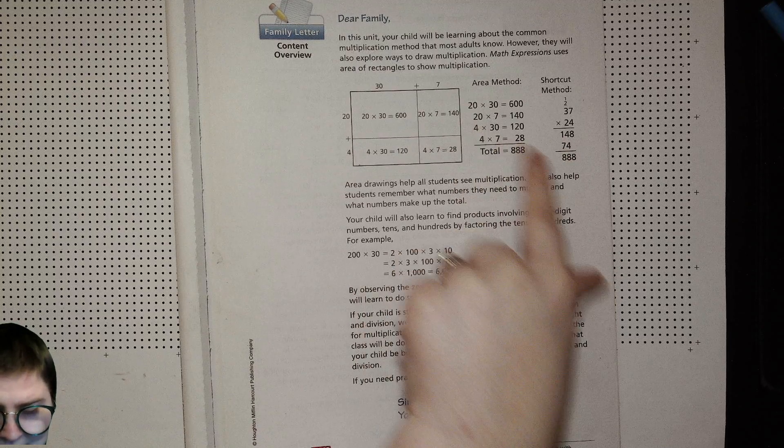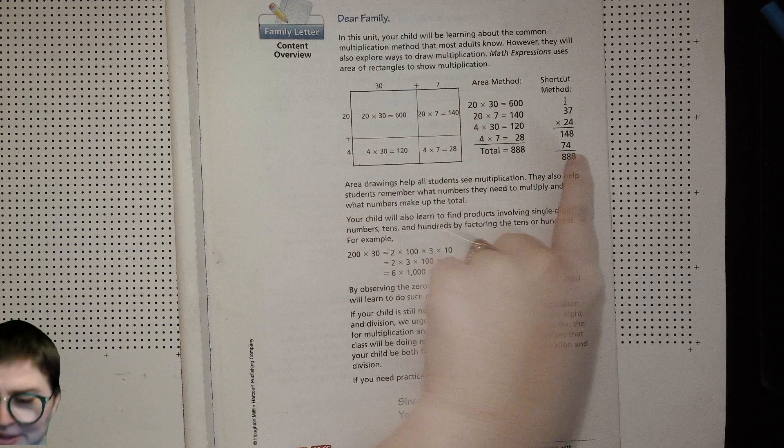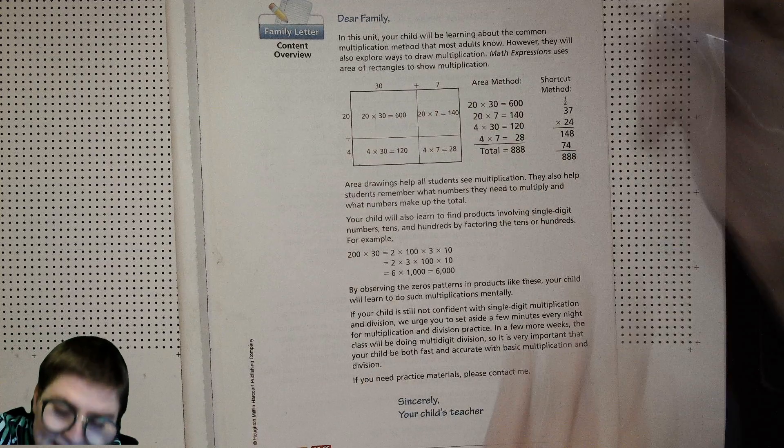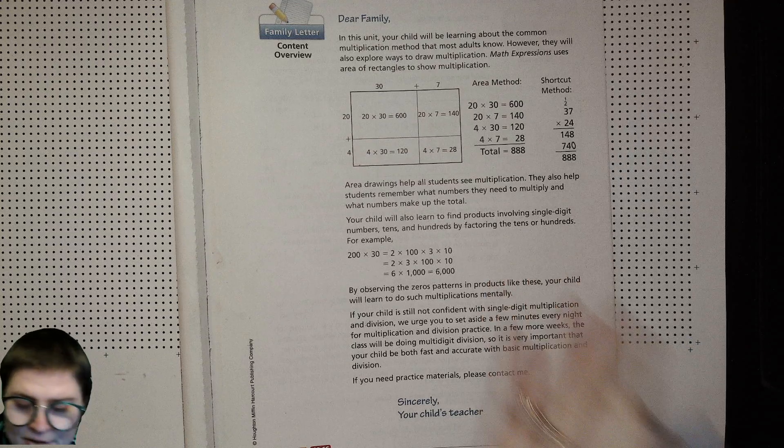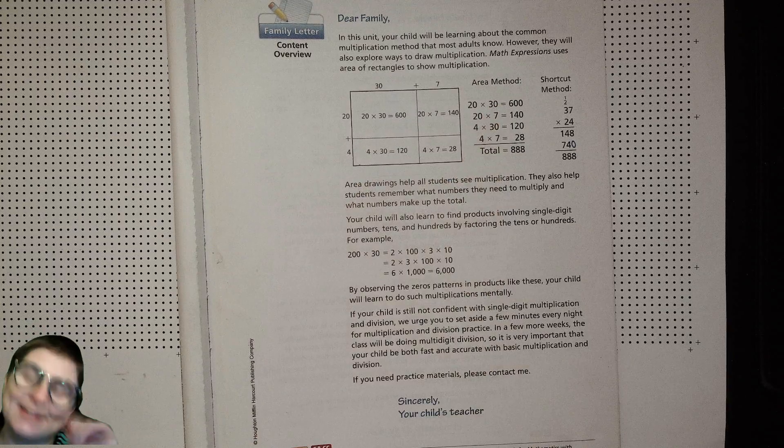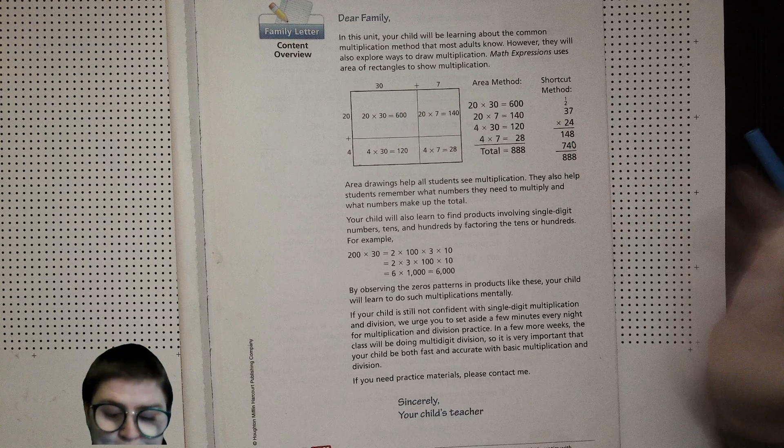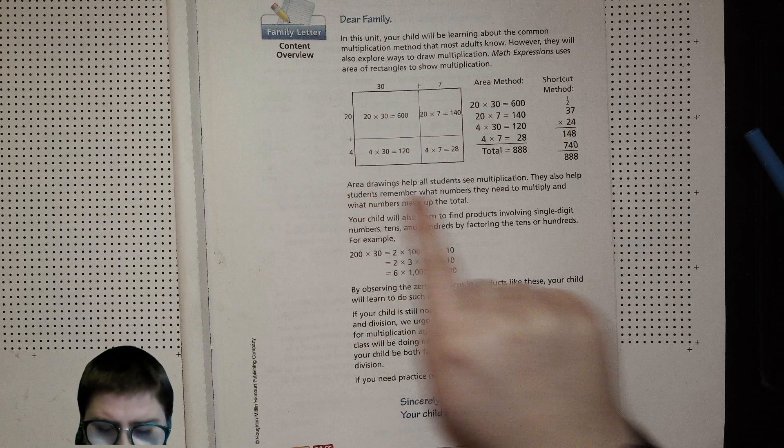And then the 740, really when I did this as a kid, we always put the zero there. So the 740 is the 600 and the 140. It was throwing me off a little bit. So your parents might have the zero there in their mind too. Area drawings help all students see multiplication.